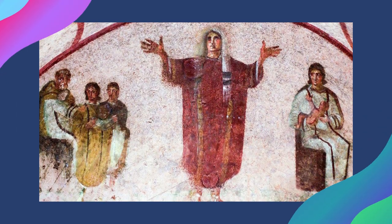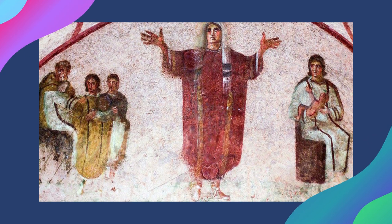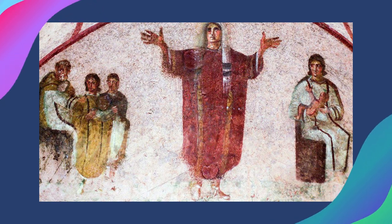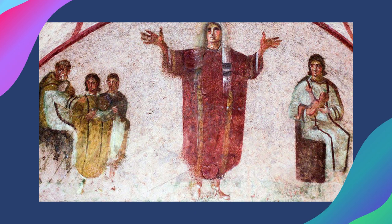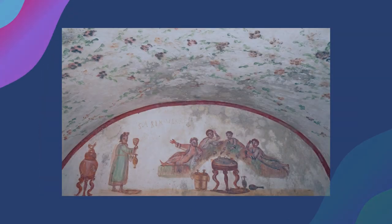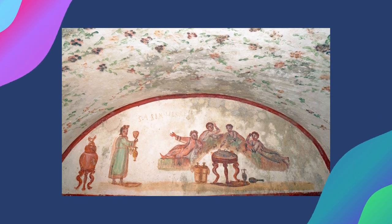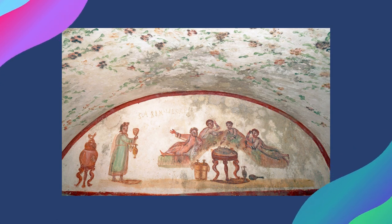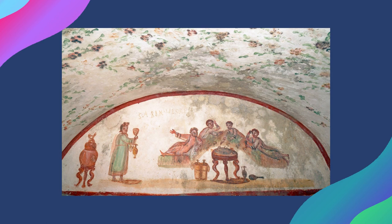Before Constantine, Christian art rarely depicted angels. The oldest known fresco featuring an angel is the Annunciation scene from the 2nd century, found in the cemetery of St. Priscilla. A 3rd century painting of the same subject was discovered by Wilpert in the cemetery of Saints Peter and Marcellinus, where the archangel Gabriel is depicted in human form wearing a tunic and pallium.